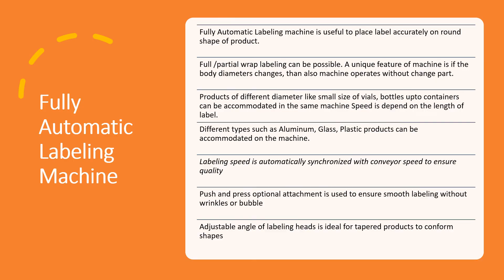Fully automatic labeling machines are able to accurately apply labels on round-shaped products. An important feature is wrap labeling — whereby the label completely wraps around the bottle — which is a unique feature of fully automatic machines. If the body diameter changes, the machine operates without changing any parts, and products of different diameters like different sizes of vials, bottles, and containers can be accommodated in the same machine. Fully automatic machines do not require any operator involvement and operate at a very high speed of almost 300 units per minute.